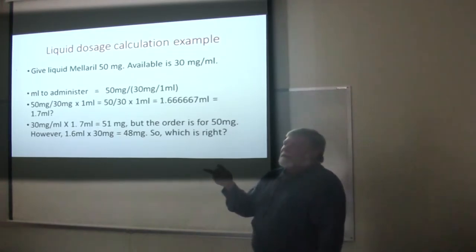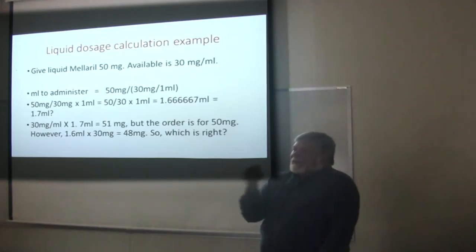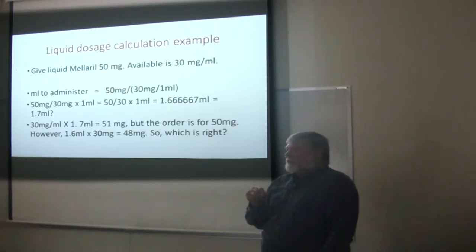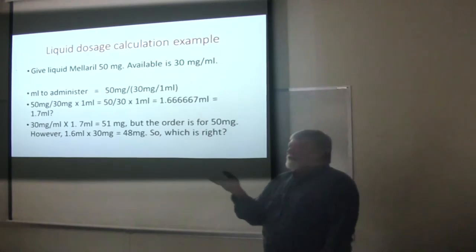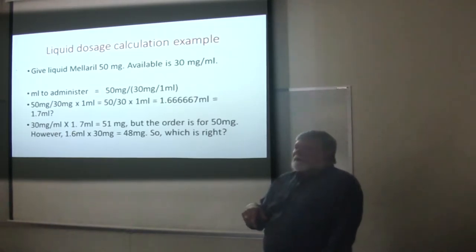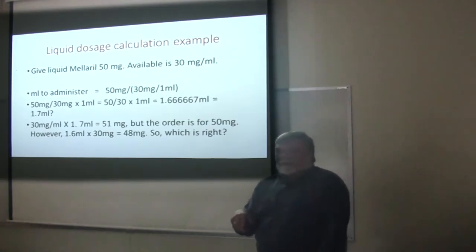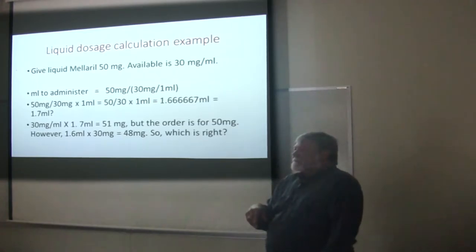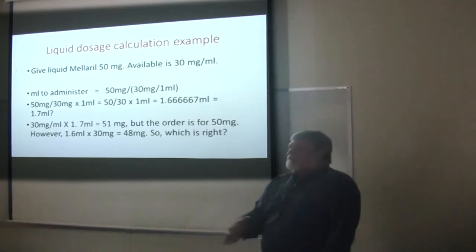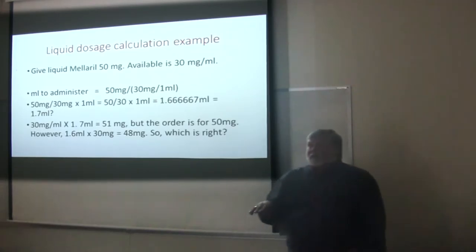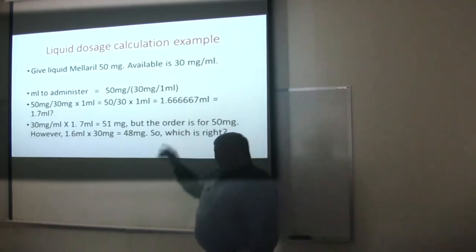If the morphine in that vial has 1 milligram per mL and you have an order to give 2 milligrams, you're going to give 2 mLs. But if that vial says 1 milligram in 5 mLs, you're going to give 10 mLs. Are you giving any more morphine in either case? No — it's always the same amount. Think about your drugs in terms of dose, not volume.